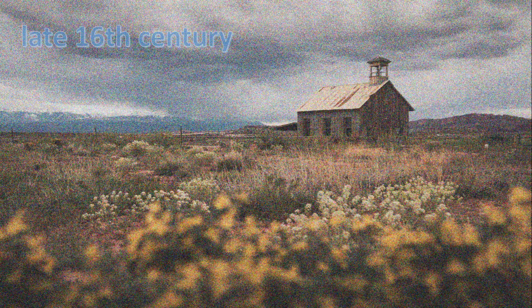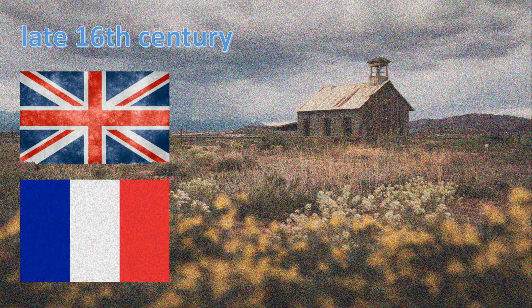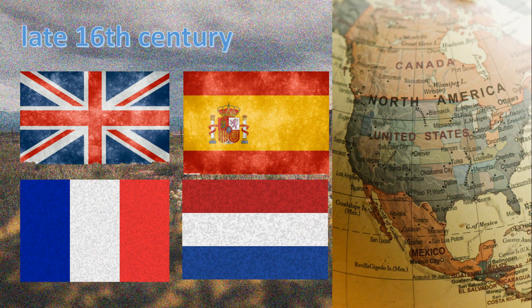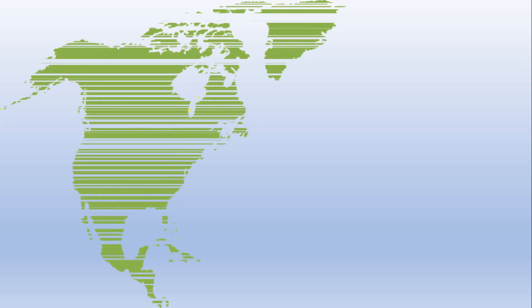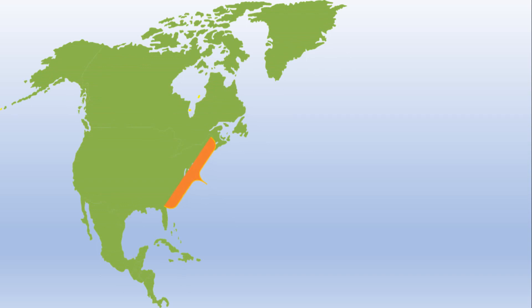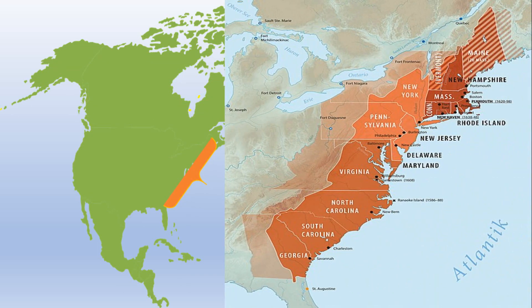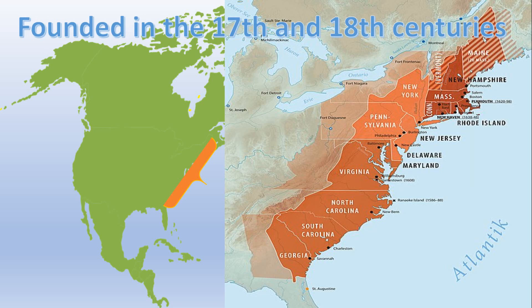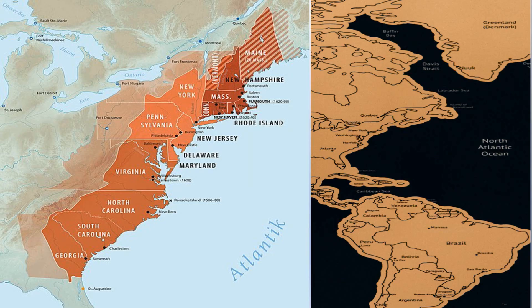In the late 16th century, England, France, Spain, and the Dutch Republic launched major colonization programs in North America. On the Atlantic coast of North America, the 13 colonies, also known as the 13 British colonies or the 13 American colonies, were a group of British colonies founded in the 17th and 18th centuries.